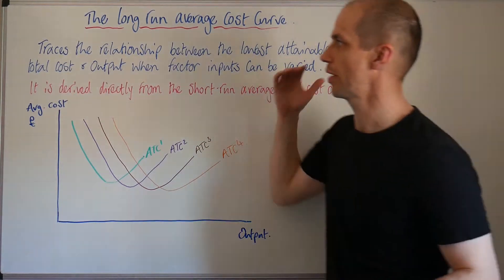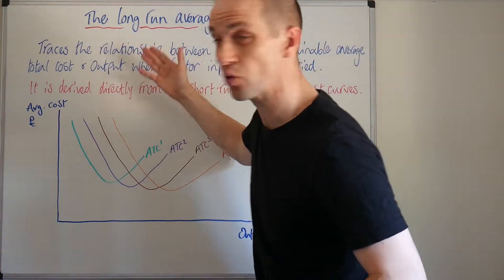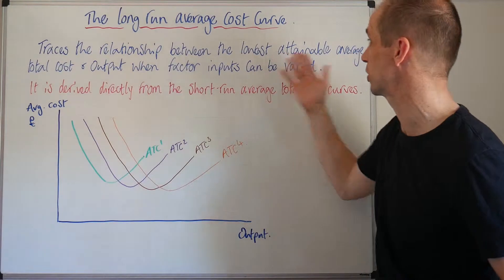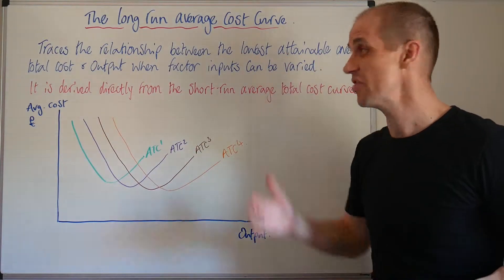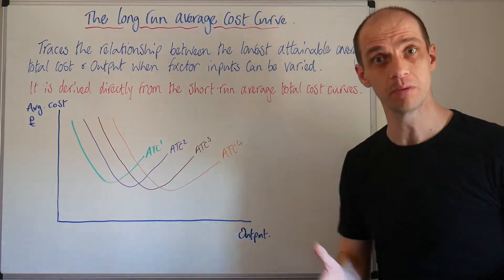When it comes to our long run average cost curve, it really traces the relationship between the lowest attainable average total cost and the output when factor inputs are varied.